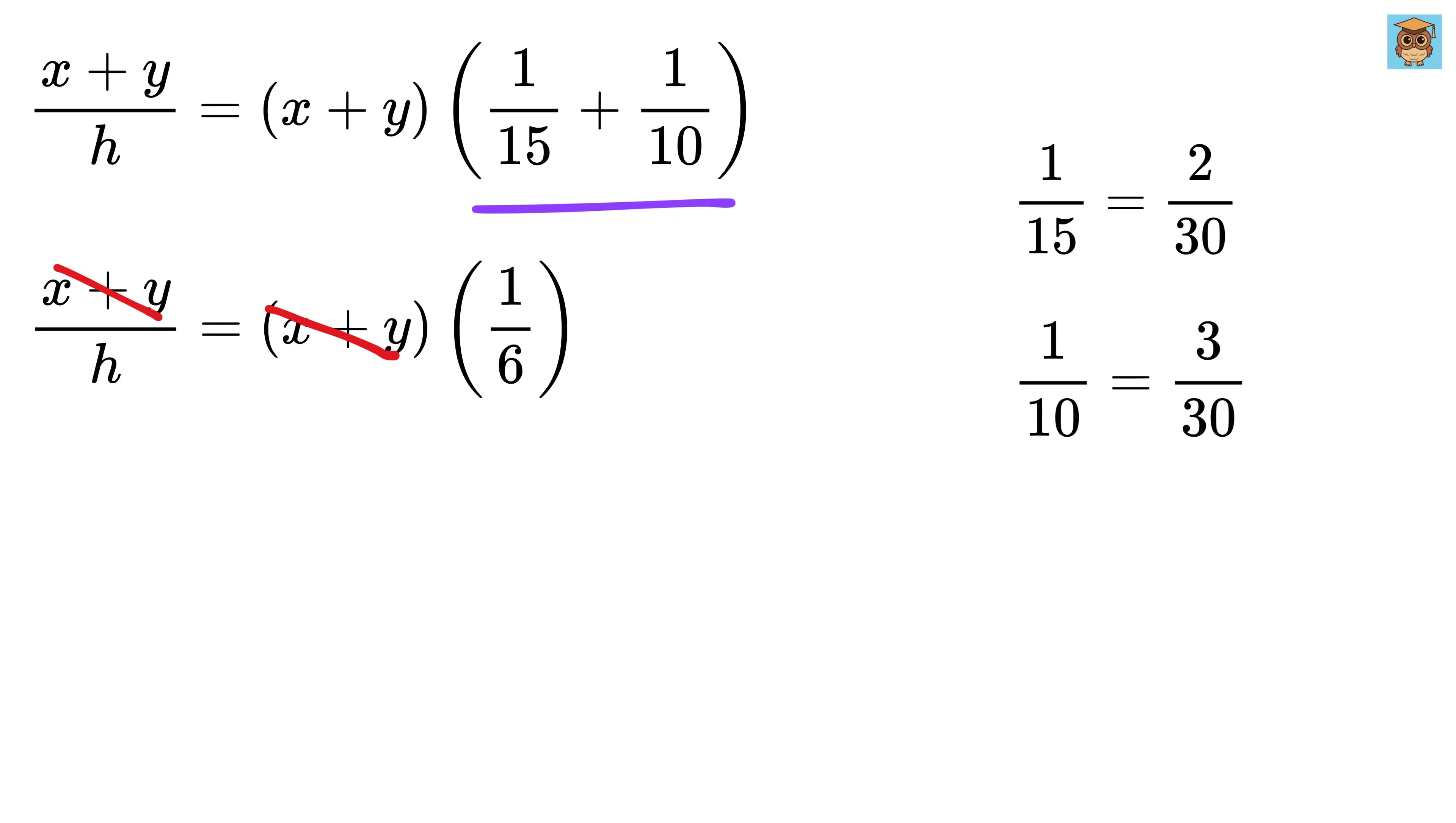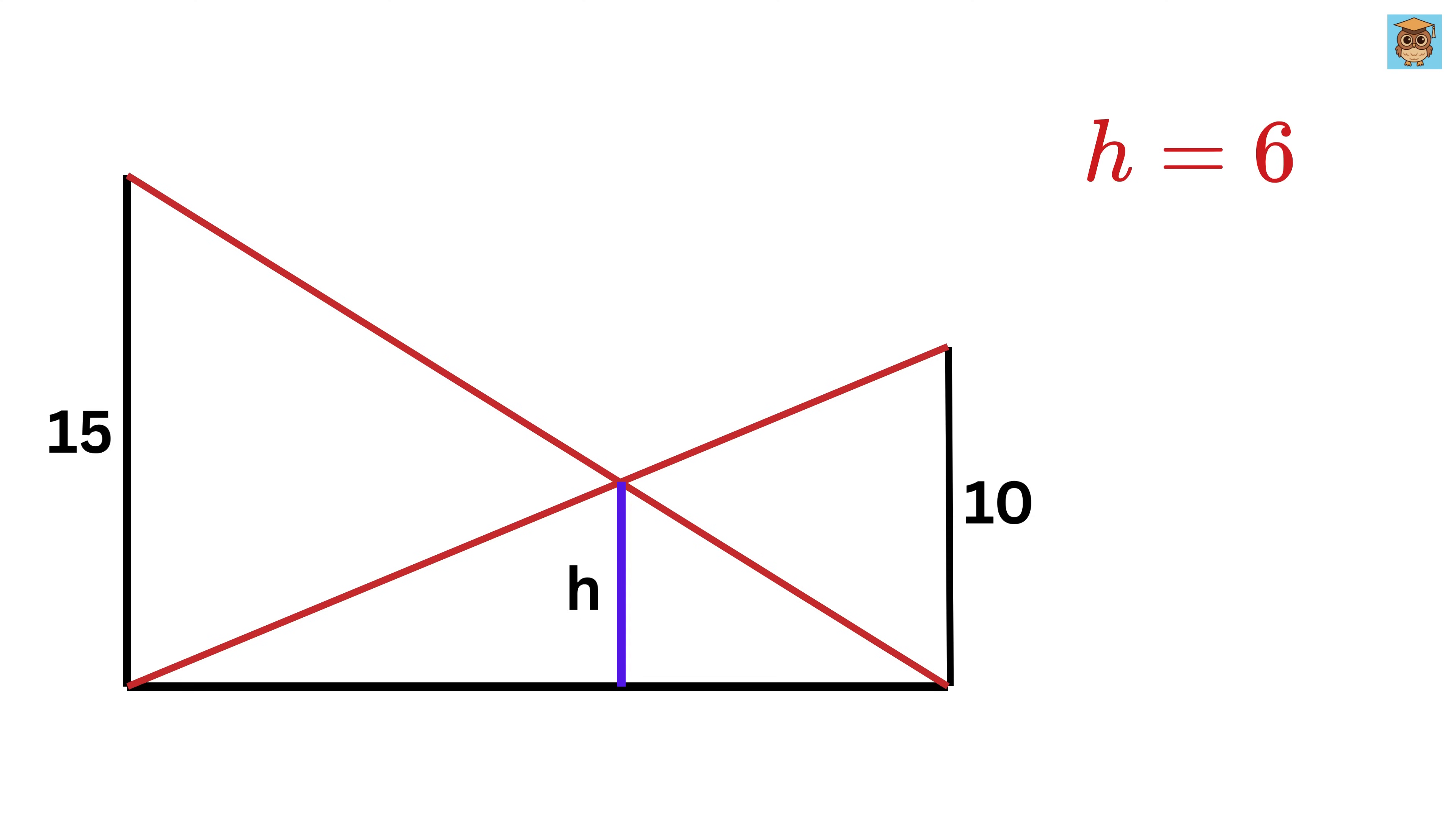Now, we can cancel X plus Y from both sides of the equation, and we are left with 1 over H equals 1 over 6, which means H is equal to 6, and that's it. So good!